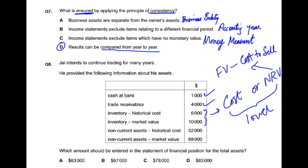यह कौन सा concept है? यह prudence concept है। Prudence कहता है अपने profits को जान-बूझ कर overstate न करो, और अपने assets को भी जान-बूझ कर overstate न करो। अगर हम inventory को higher value पर रखते हैं तो वो profit जो हुआ नहीं उसे book कर रहे हैं — यह prudence के खिलाफ है। तो दोनों में से lower value रखनी है।